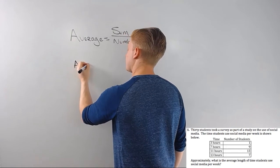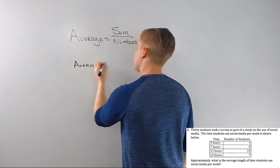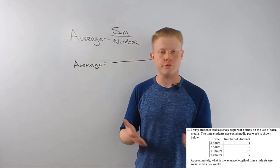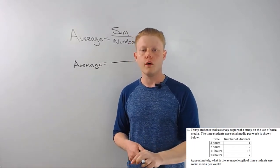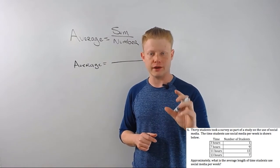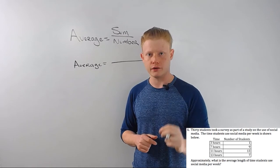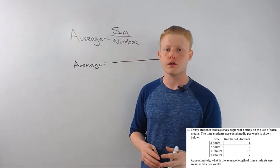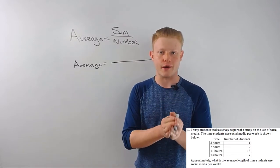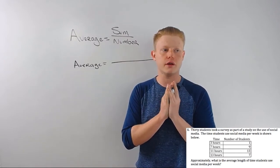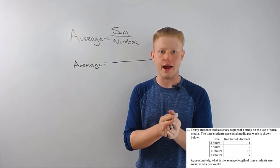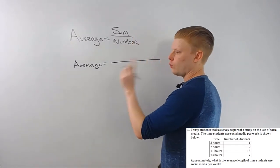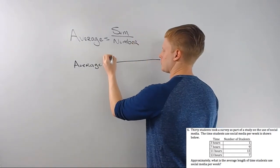Here's where people kind of get goofed — they don't realize what to put on top. Do you put the three on top or do you put the one on top? The one is how many times this happens: there's one student, one thing. The three is the value. In the case of weighted average, the way you find it is value times number. There is one student that spends an average of three hours a week, so that one three is counted.